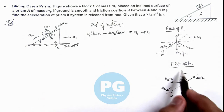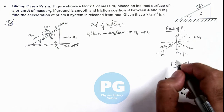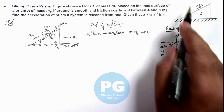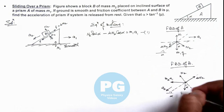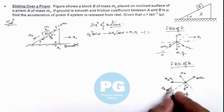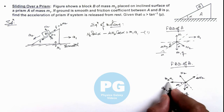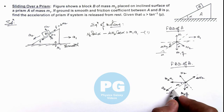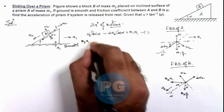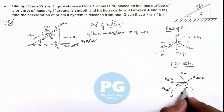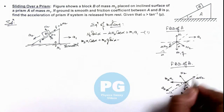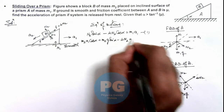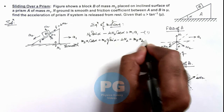For block B, there is no need to write the vertical direction equation for A since it is not moving vertically and the ground is smooth. Writing the equation of motion for B along the incline: the forces acting along the incline in the sliding direction are m2·a1·cos(α) + m2·g·sin(α) − μN2 = m2·a2. This is Equation 2.